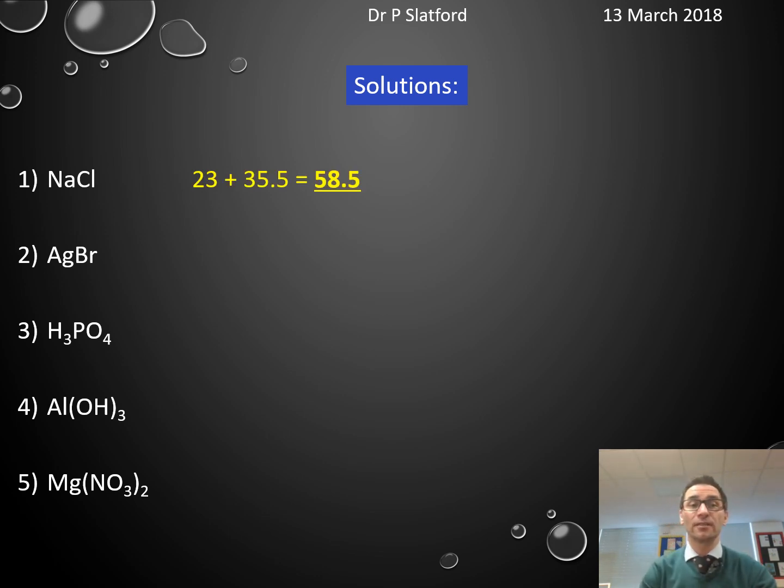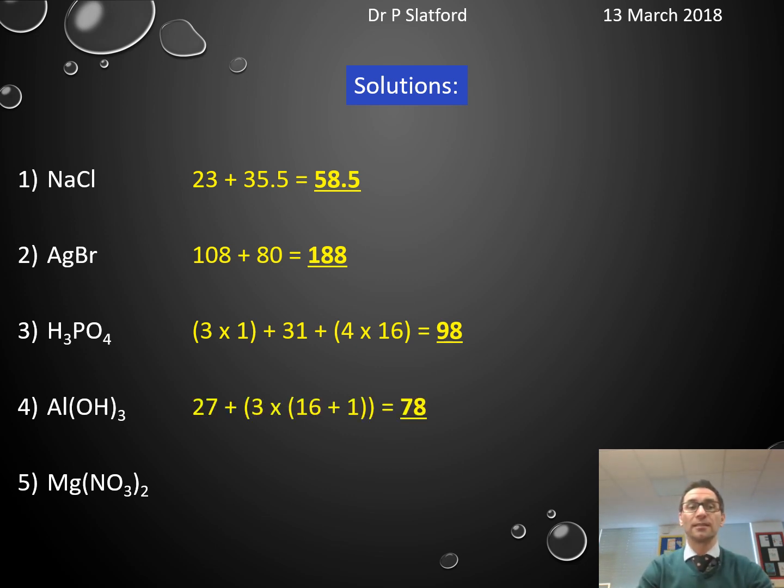So sodium chloride, there's one sodium, one chlorine, 23 and 35.5 is 58.5. Silver bromide, 108 plus 80 is 188. Phosphoric acid comes out as 98. Aluminum hydroxide comes out as 78. Magnesium nitrate comes out as 148.